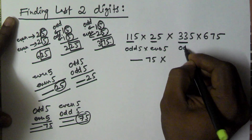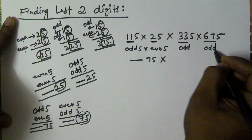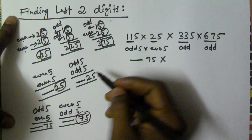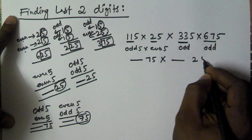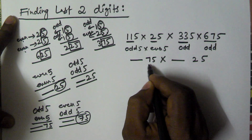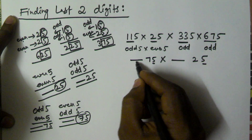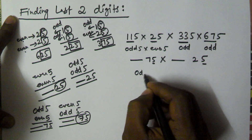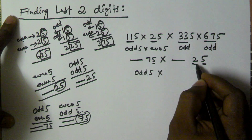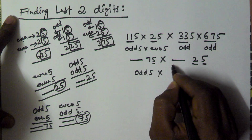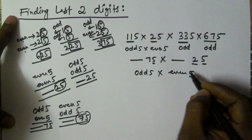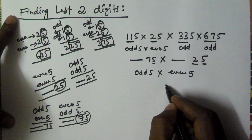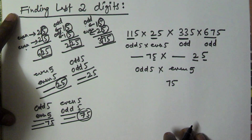We have odd 5 and odd 5, and odd 5 and odd 5 — combining them gives odd 5. Then odd 5 with the even 5 (675 ends in 7, making it odd, and 5 here gives even 5) — so odd 5 and even 5 means the last 2 digits are going to be 75.